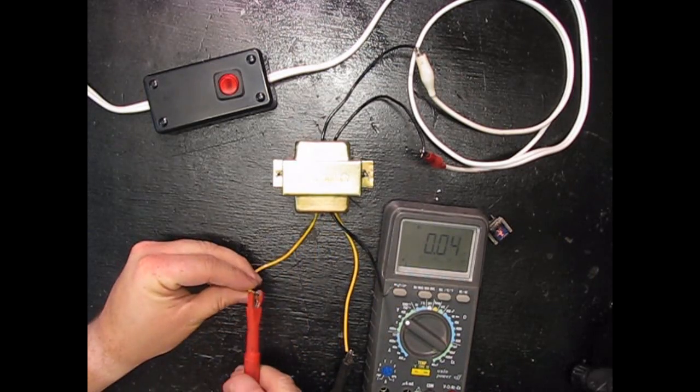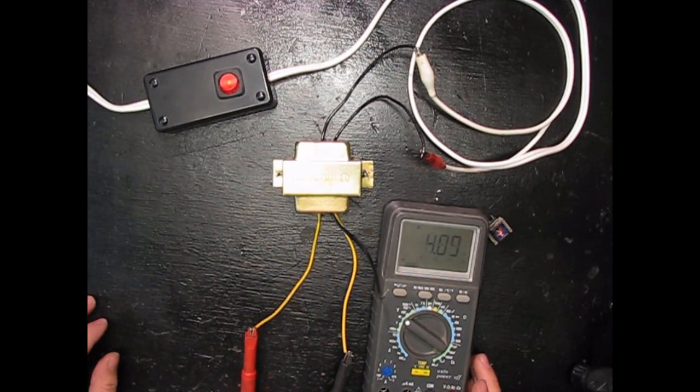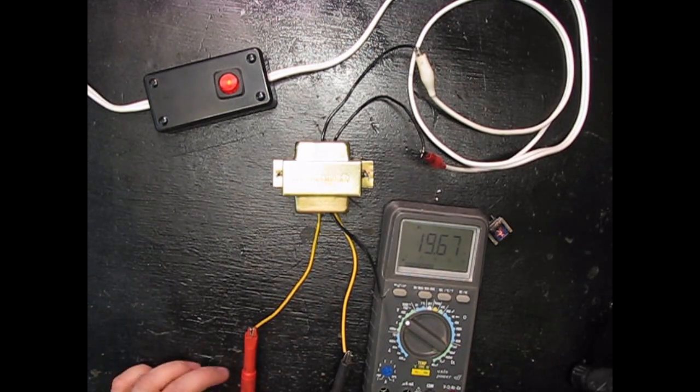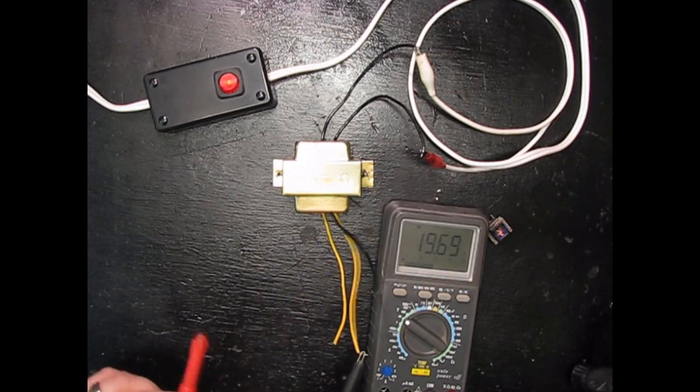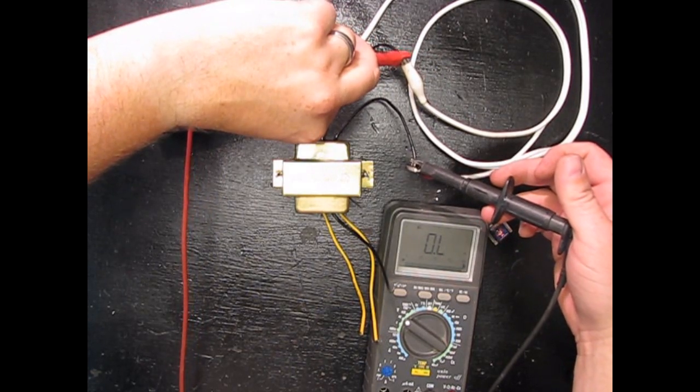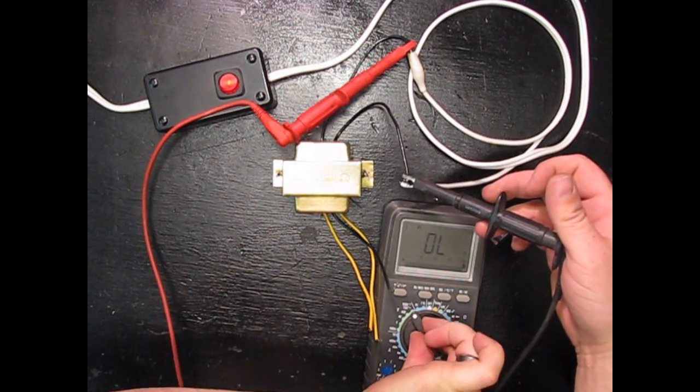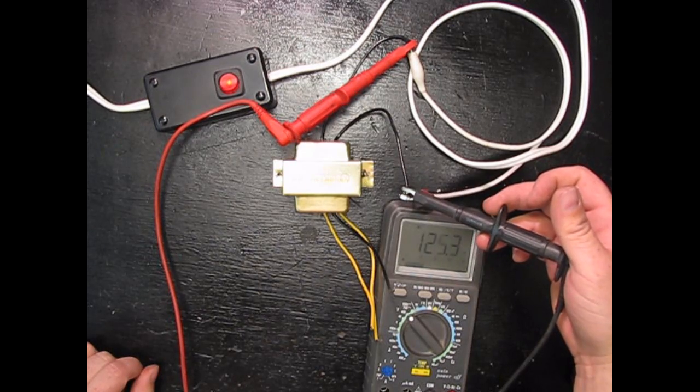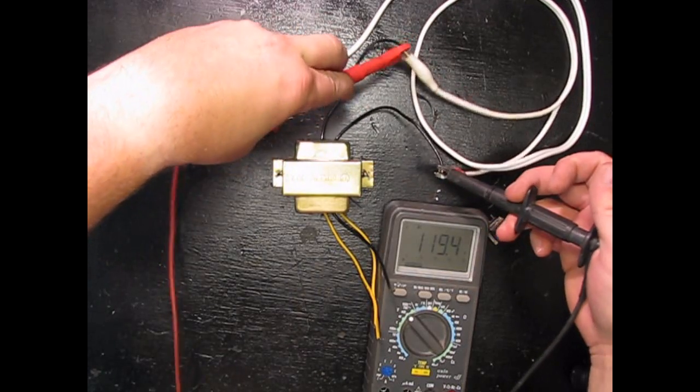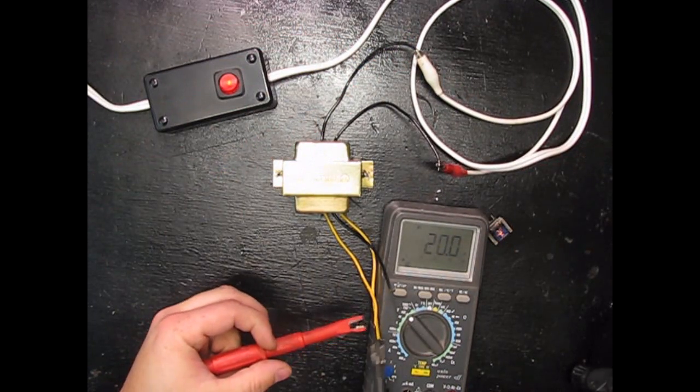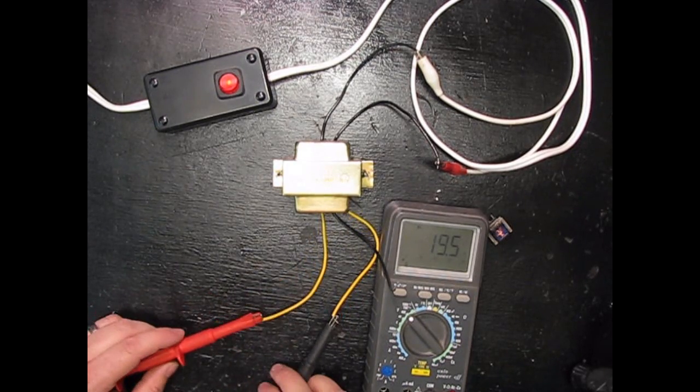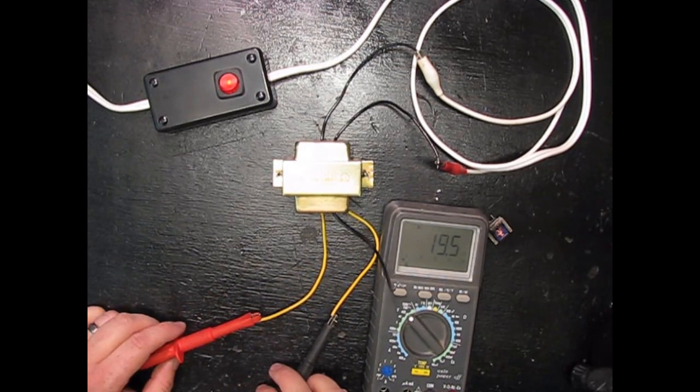Stick our meter on, got about 20 volts coming out of this side. Like I said, if I measure this side, we have 120 volts. So 120 volts in and magically we're getting 19 out this side, alternating current AC.